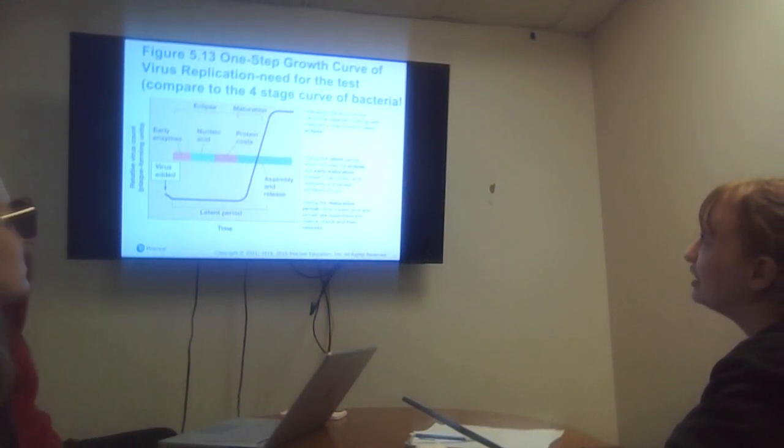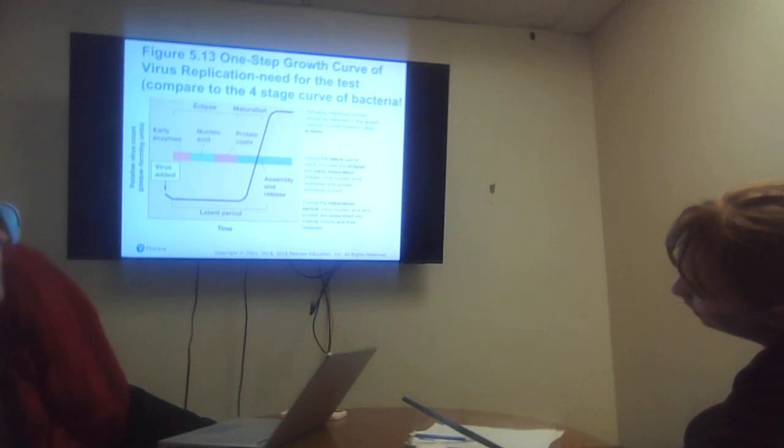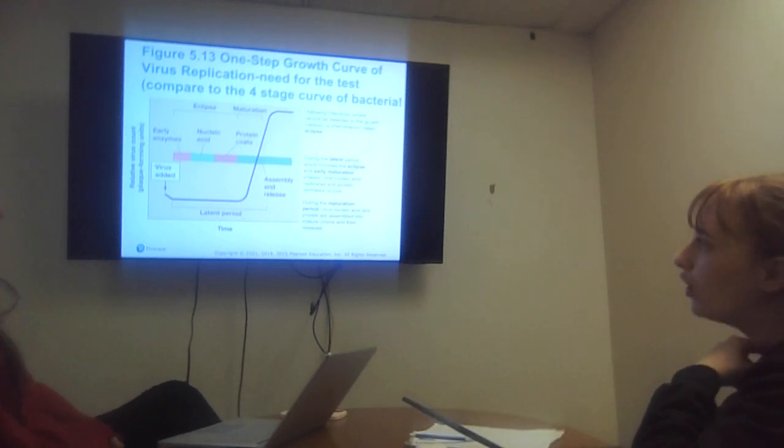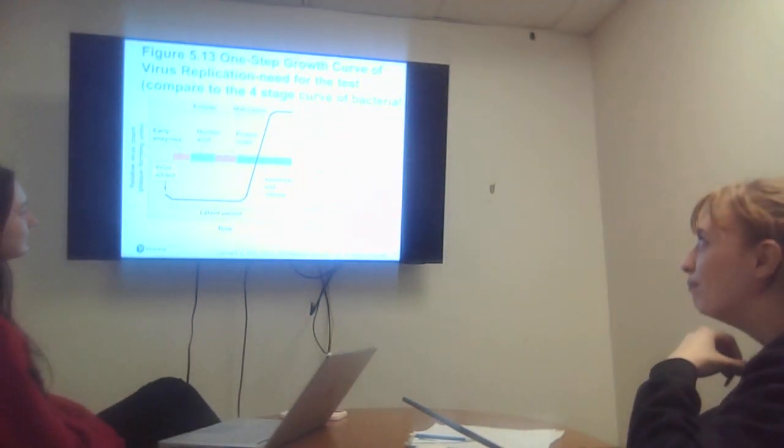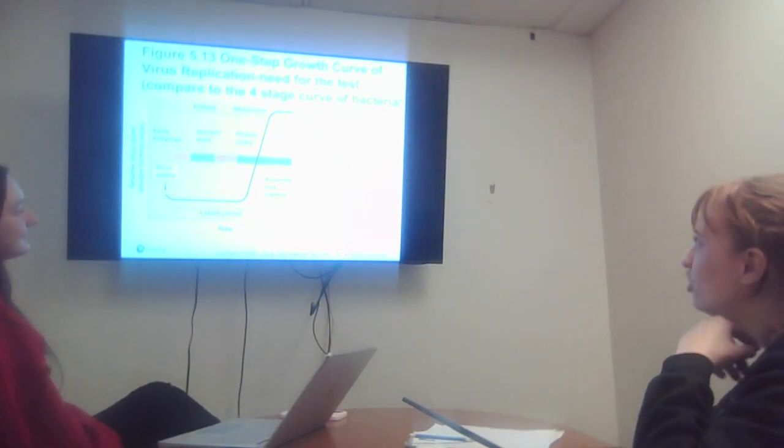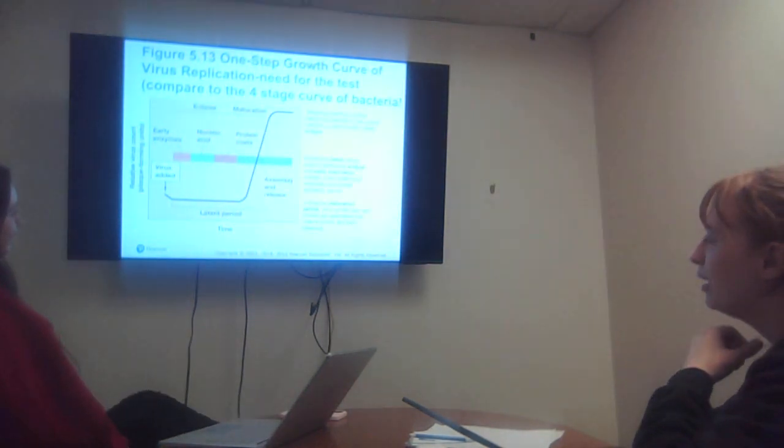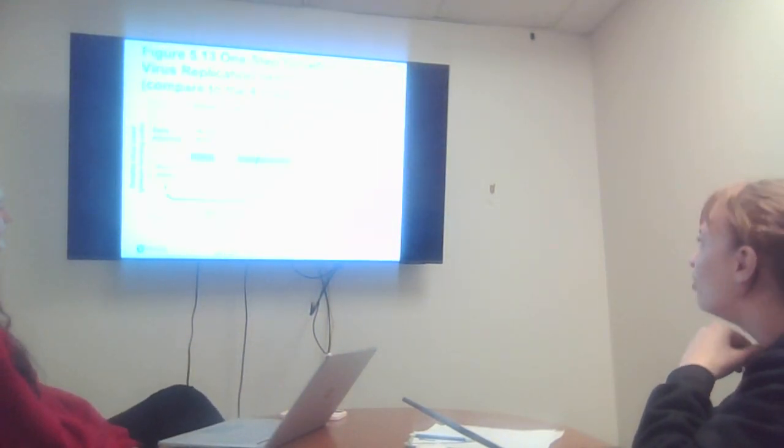The growth curve of virus replication, need to know for the test, compared to the fourth stage curve of bacteria. This is the relative virus count versus time for plaque forming. Infectious virus cannot be detected in growth medium during eclipse. Over the latent period, the virus is added and eclipse happens. Maturation happens and between that, nucleic acid protein coats in assembly and release during the latent period, which includes the eclipse and early maturation phase. Viral nucleic acid replicates and protein synthesis occurs during the maturation period. Virus nucleic acid and protein are assembled in mature virions and then released.